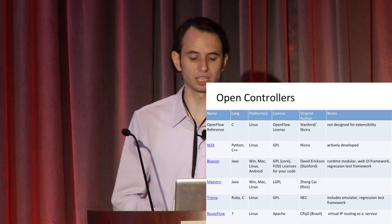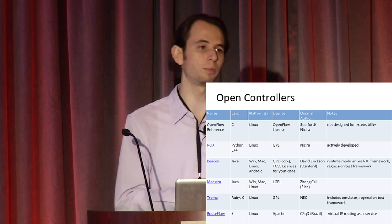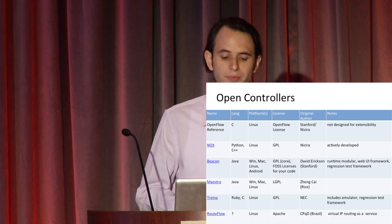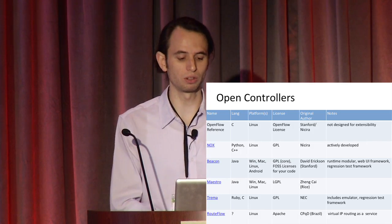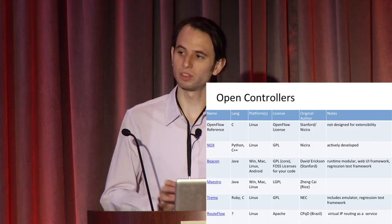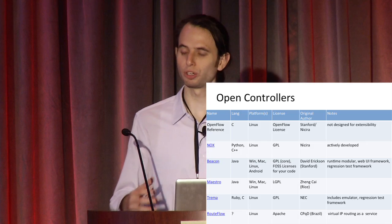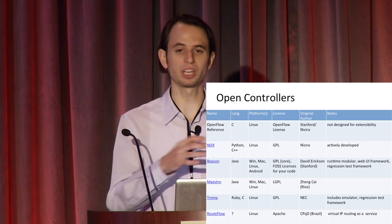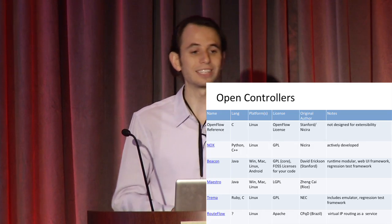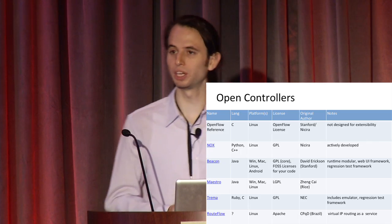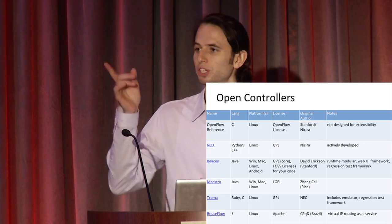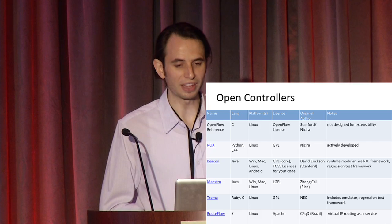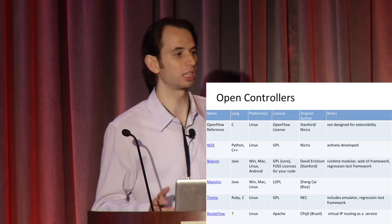Beacon has some really nice features: it's runtime modular so you can swap pieces in and out - if the web server breaks, you can replace just that part without disrupting your forwarding. It has a regression test framework and web UI. Maestro is another Java controller. Trema you'll hear more about later - it has a regression test framework built in along with an emulator. The Trema team is thinking about the entire picture of how you efficiently build an SDN application, test it, and deploy it. RouteFlow - I'm going to show a video on that.